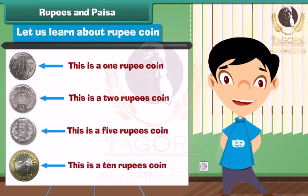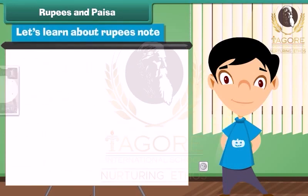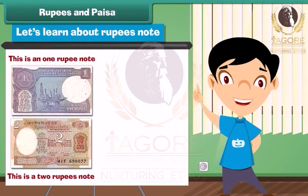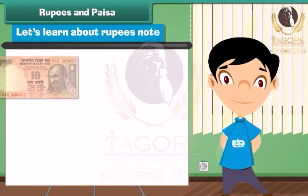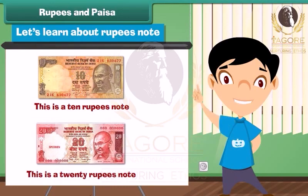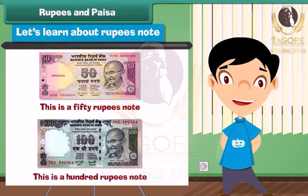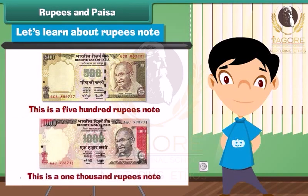This is a 10 rupees coin. Let's learn about rupee notes. This is a 1 rupee note. This is a 2 rupees note. This is a 20 rupees note. This is a 50 rupees note. This is a 100 rupees note. This is a 500 rupees note. And this is a 1,000 rupees note.